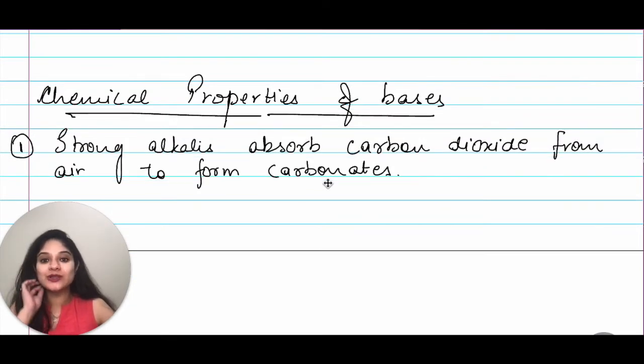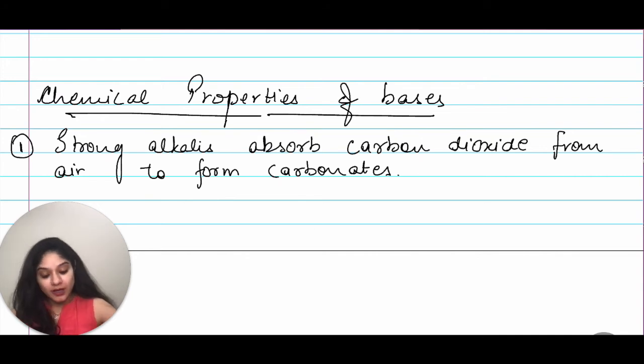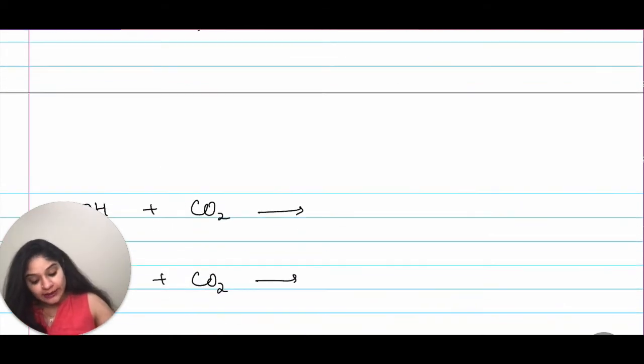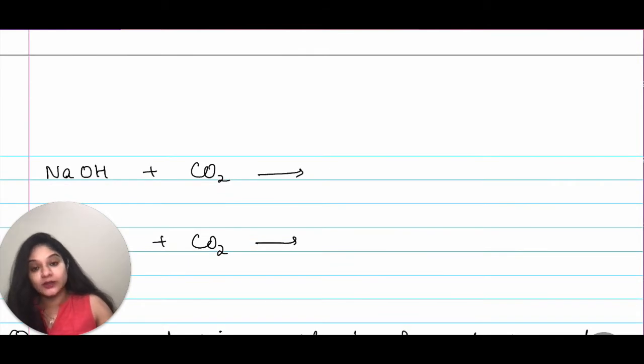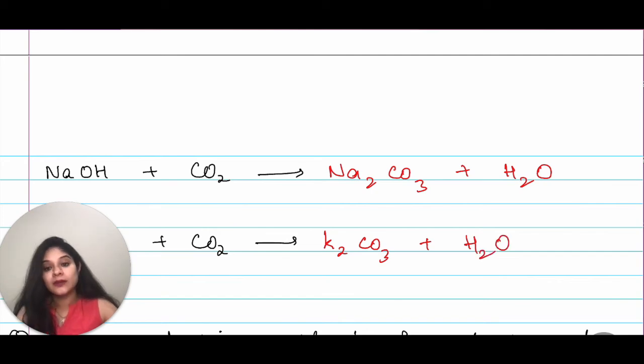Okay, students, let's move on to the chemical properties of bases. What happens in here is, first one, strong alkalis absorb carbon dioxide from air to form carbonates. That means, the reaction would be alkali plus carbon dioxide. I have NaOH plus CO2. That will give me Na2CO3 plus H2O. KOH plus CO2. That will give me K2CO3 plus H2O.